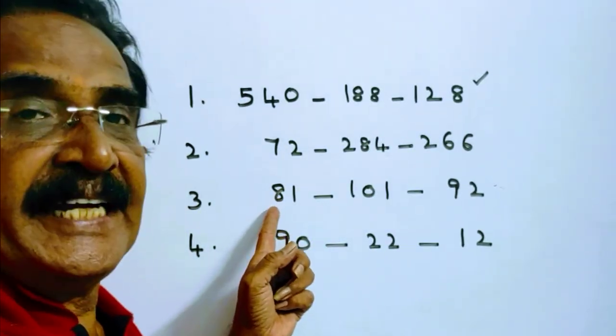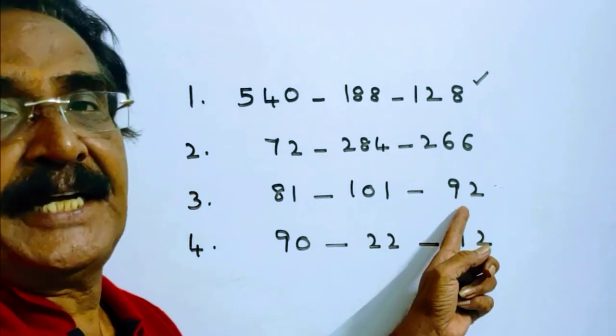Similarly, 81 divided by 9 equals 9. 9 plus 92 equals 101.